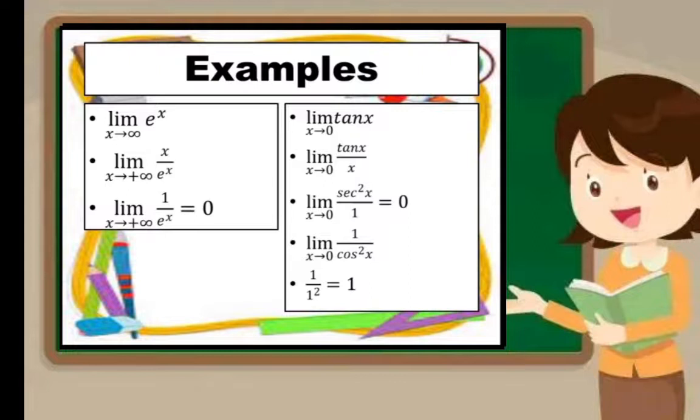Another limit: tan(x) as x approaches 0. So the limit of tan(x) over x as x approaches 0.